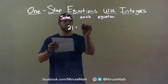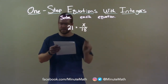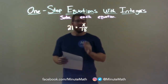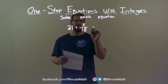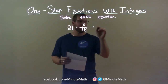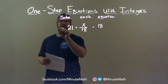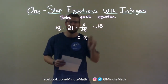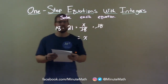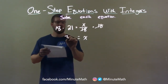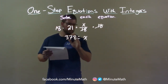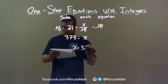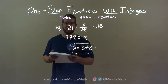21 equals x over 18. I want to get x by itself, but it's being divided by 18. To get rid of that 18, I do the opposite of division — multiplication. I multiply both sides by 18. Now I have x by itself because the 18s cancel on the right. And 18 times 21 is 378. So x equals 378 is our final answer.